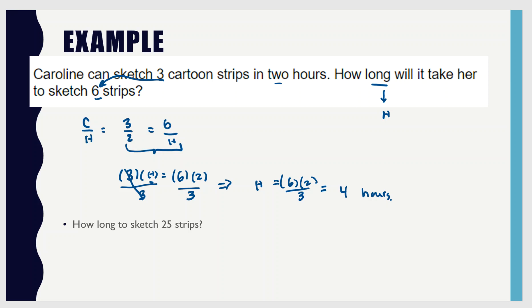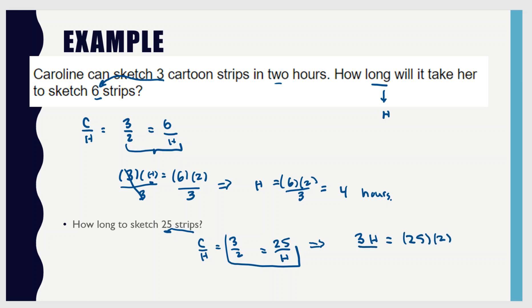Another way to do it is the method I'm setting up, and that helps when we have numbers that are not so easy to work with. Now we want to know 25 strips. We know cartoons to hours is 3 to 2, and the cartoons are 25. Cross multiplying: 3 times hours equals 25 times 2. Dividing by 3 gives hours equals 25 times 2 divided by 3, which on my calculator is 16.67 — that's also 16 and two thirds hours.